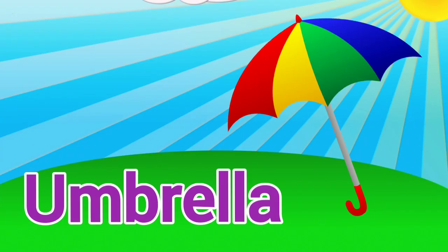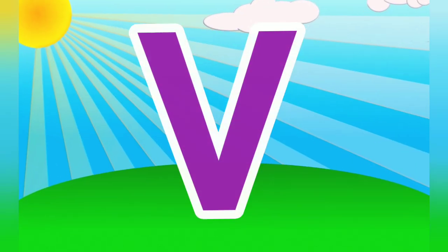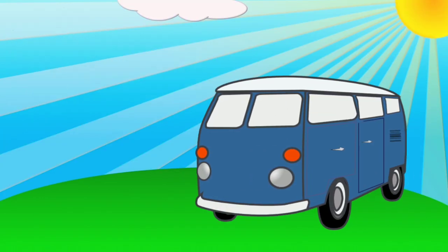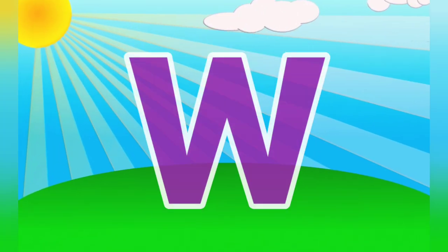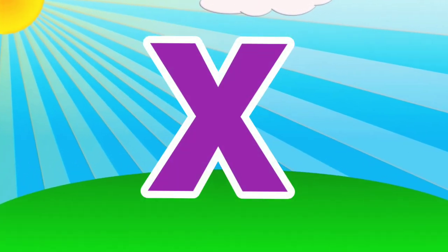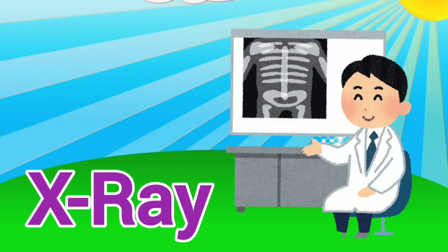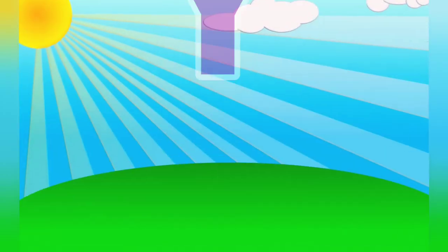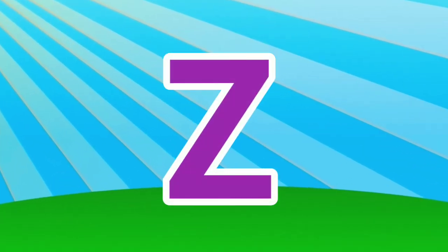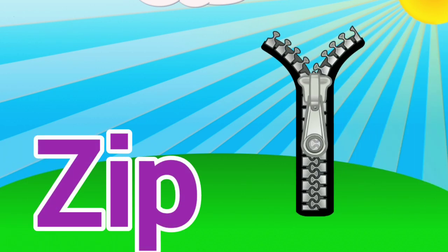U for umbrella. V. V for vein. W. W for watch. X. X for x-ray. Y. Y for yard. Z. Z for cheap.